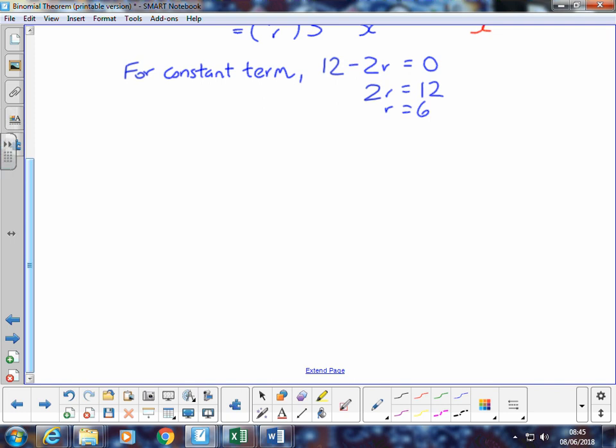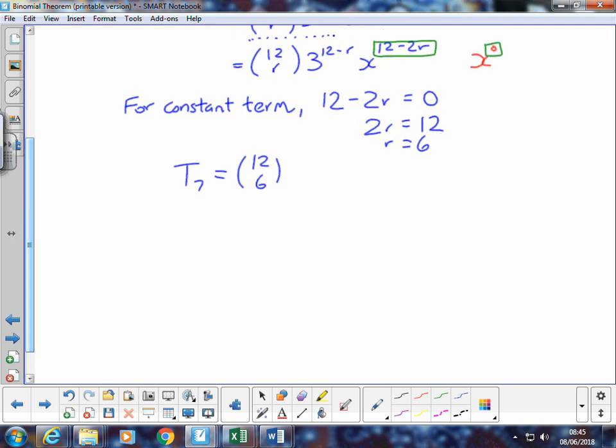And if we want to assemble the term, if r is 6, it means that the 7th term is 12 choose 6. So that's just r, multiplied by 3 to the power of 12 minus r, so we've got 3, 12 minus 6 is 6, and we've got x to the power 0 there. That obviously cancels out to 1, and 12 choose 6 works out as 924, 3 to the power of 6 is 729, which means that our total, therefore, is 673,596.